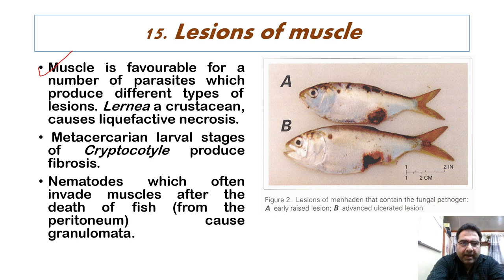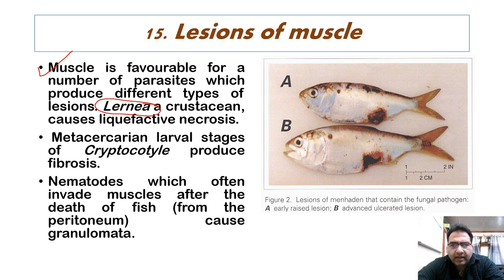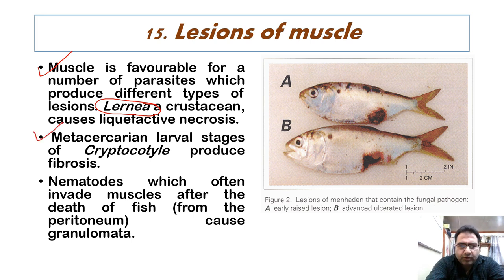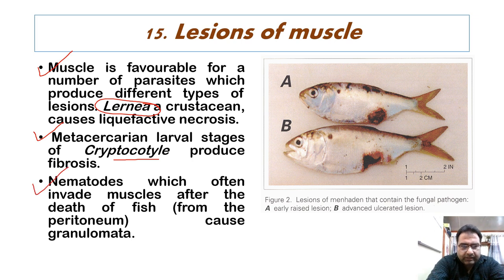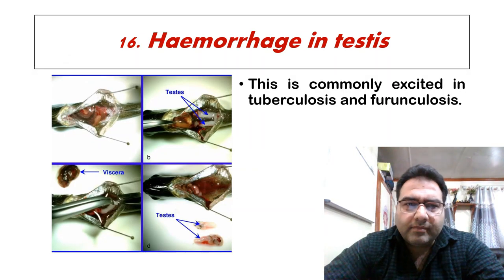Another pathological condition is lesions of the muscles. Muscles are a favorable site for a number of parasites which produce different types of lesions. Lernaea, a crustacean, causes liquefactive necrosis in fishes. Metacercarial larval stages of Cryptocotyle also produce fibrosis. Nematodes often invade the muscles after the death of the fish from the peritoneum and cause granulomata as well. Muscle lesions are an important indicator of fish disease.